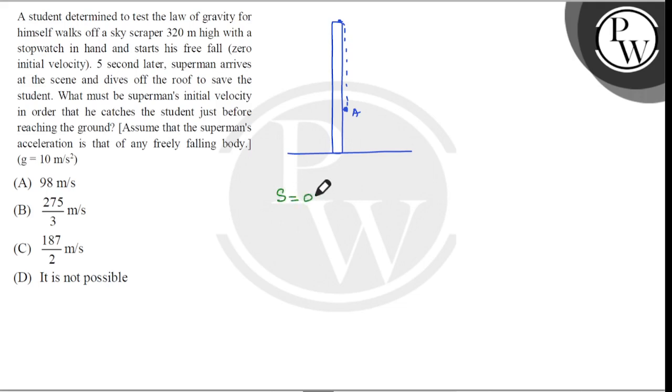Initial velocity is 0, plus 1 by 2 acceleration g into 5 square. That equals to 25 by 2 into g, taking g value as 10, we get 125 meters, which is 8 seconds total time.